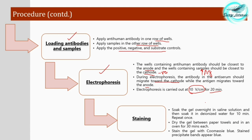To visualize results more clearly, perform staining: soak the gel overnight in saline solution, then soak in deionized or distilled water for 10 minutes, dry the gel between paper towels in an oven for 30 minutes, and stain the gel with Coomassie blue. The stained precipitate bands will appear blue, giving a positive result for the antibody-antigen reaction.